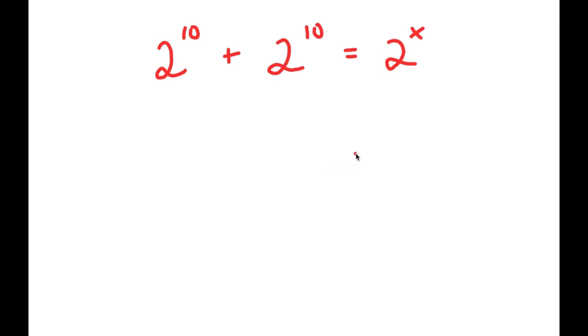In this problem, I have 2 to the power of 10 plus 2 to the power of 10 is equal to 2 to the power of x. So I want to find the value of x here.